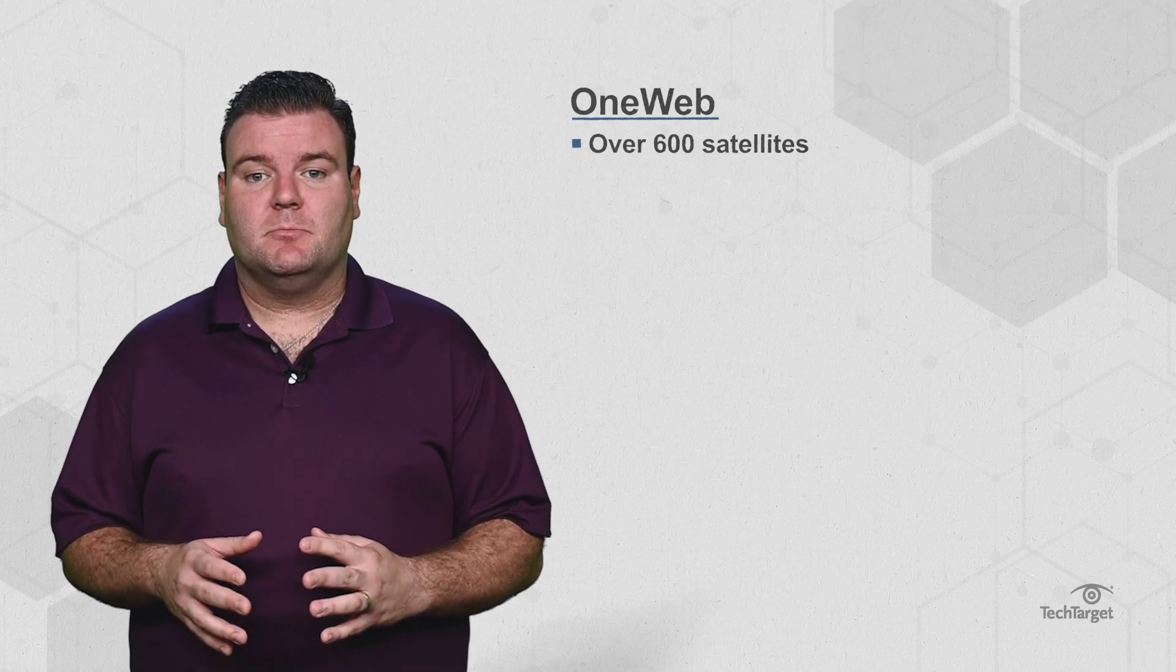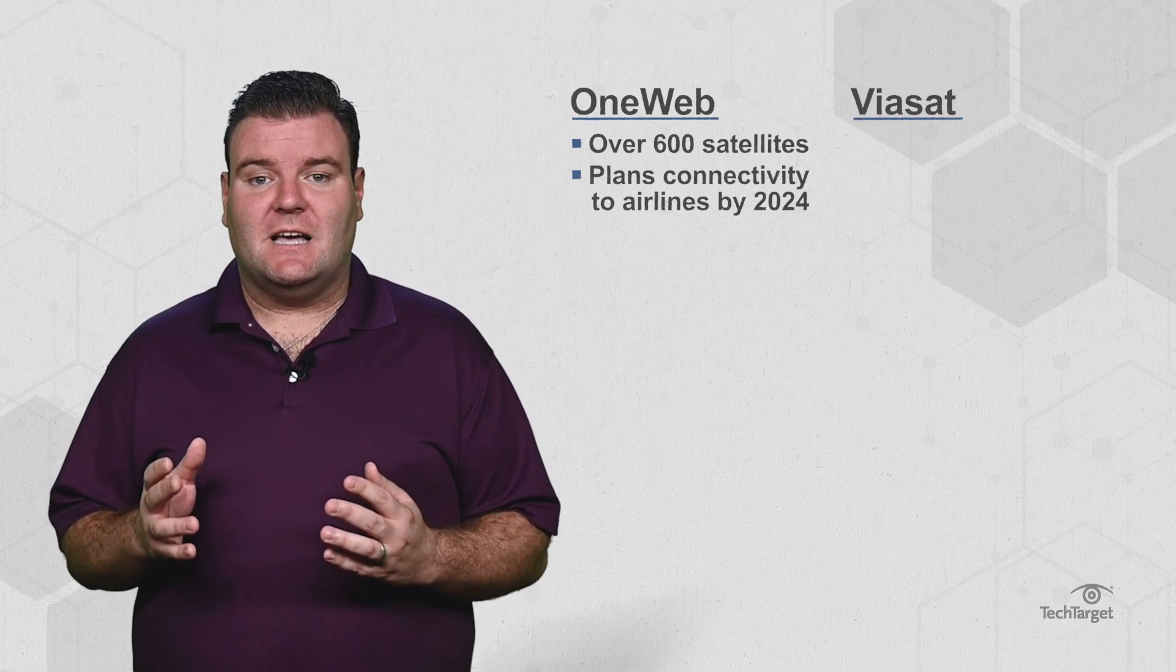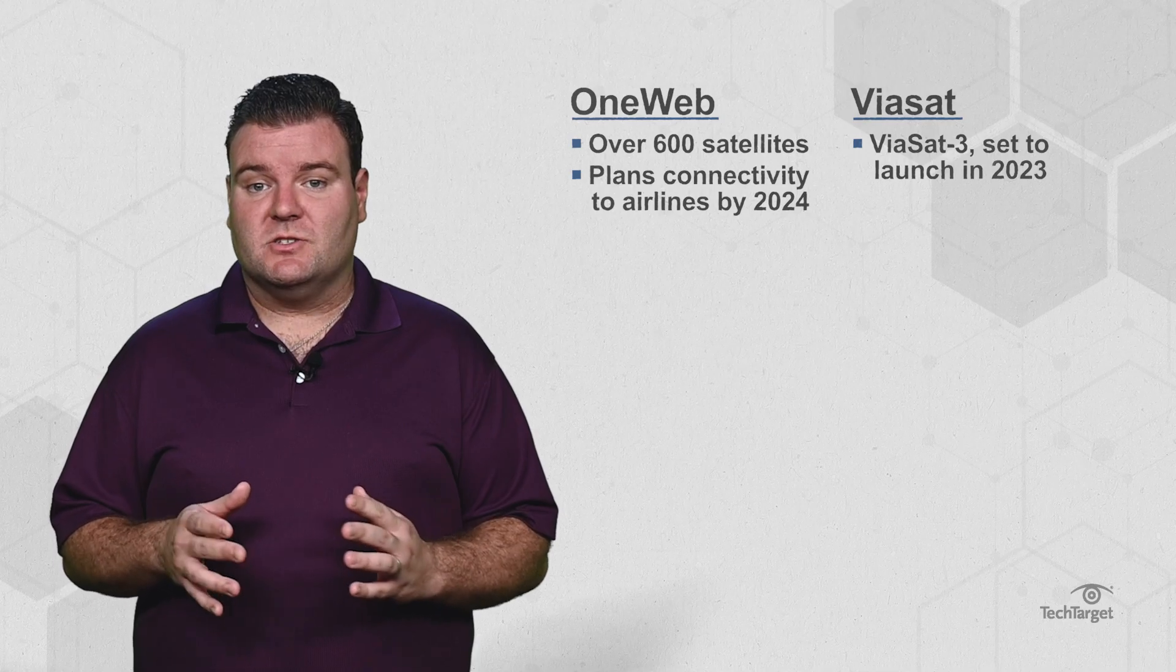Other satellite constellation competitors include OneWeb, which has over 600 satellites and plans to bring connectivity to airlines by 2024. ViaSat, whose first satellite constellation, ViaSat 3, is scheduled to launch in 2023.